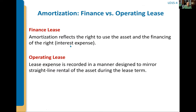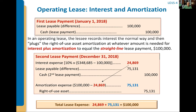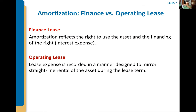Here's a summary. In an operating lease, the amortization expense is a plug so that total lease expense always equals $100,000 — mirroring straight-line rental expense. The total expense stays at $100,000 every single year throughout the lease. In a finance lease, that's not true: in early years you have higher interest expense, and the amortization is flat (straight-line). So in a finance lease, total expense is higher in the earlier years and lower in the later years as interest expense decreases, even though amortization doesn't change.